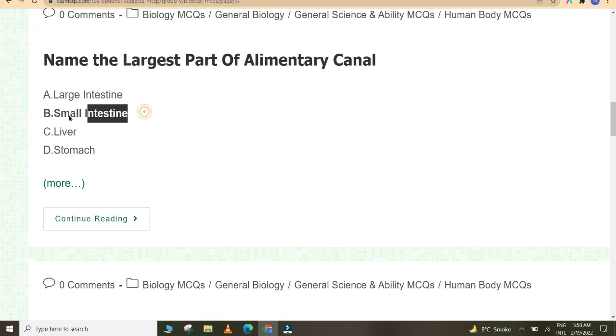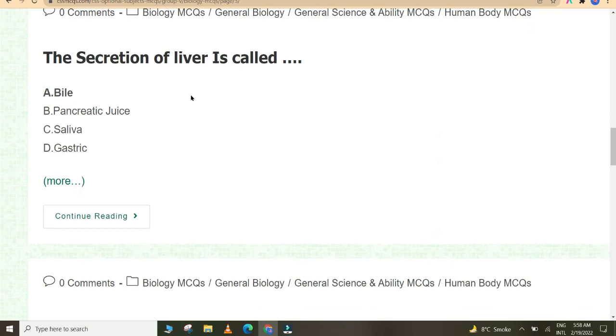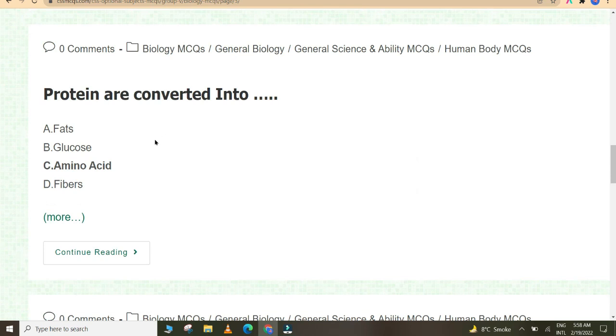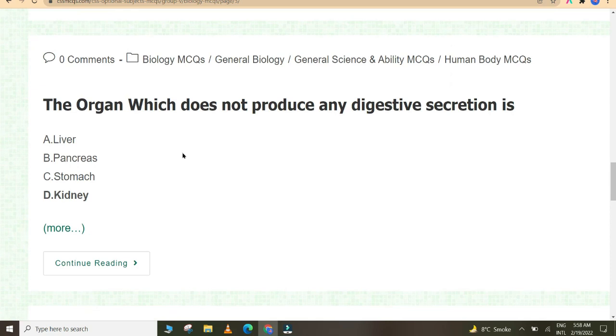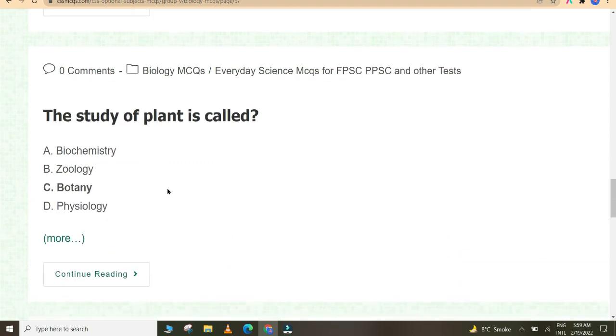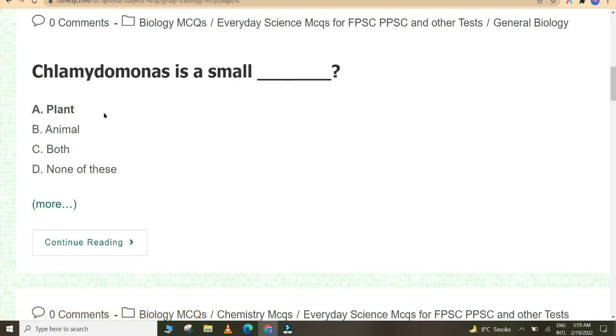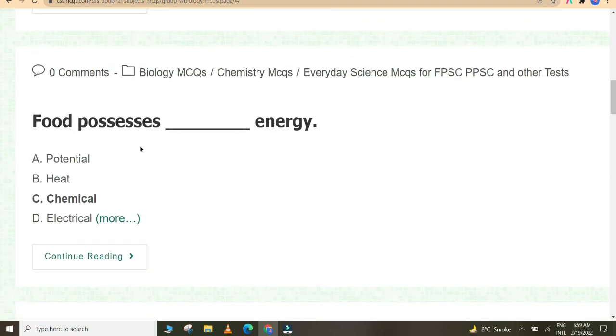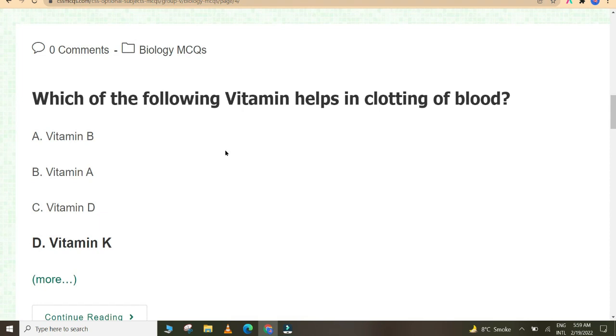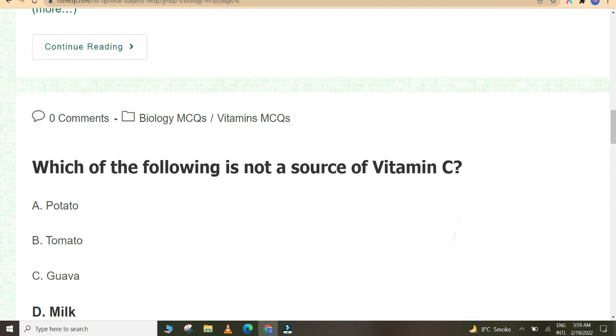The largest artery is called aorta. Blood from the heart is transported to all parts of the body by arteries. The largest part of elementary canal is small intestine. The secretion of liver is called bile. Proteins are converted into amino acids. The organ which does not produce any digestive secretion is kidney. The study of plants is called botany.